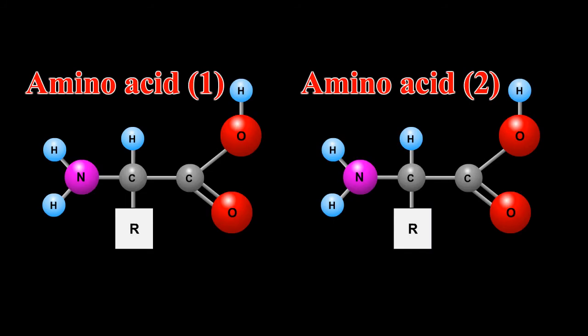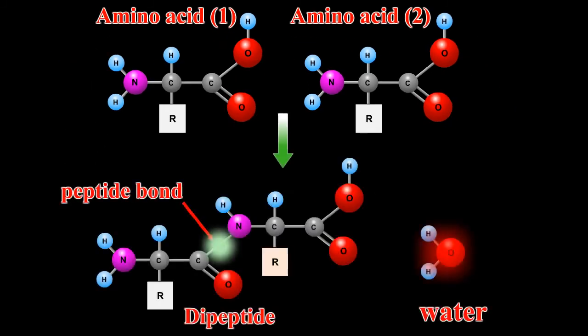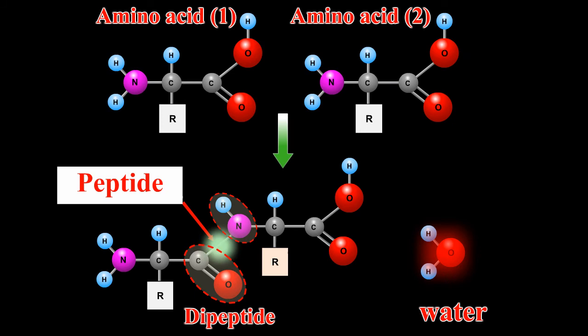What are peptides? The product formed by linking amino acid molecules through peptide linkages, i.e., C-O-N-H, is called a peptide.